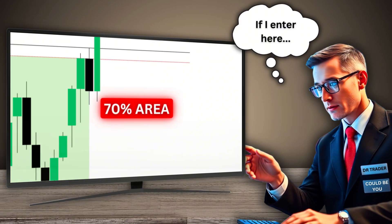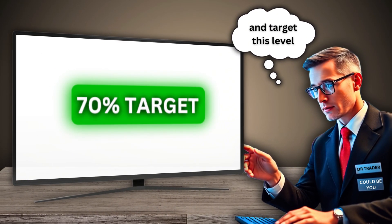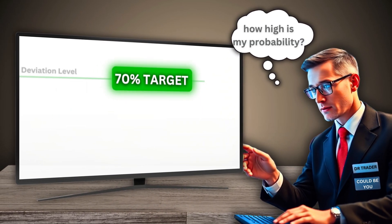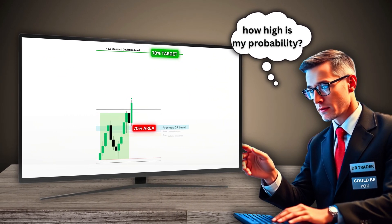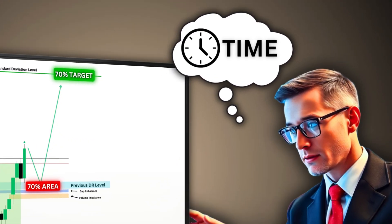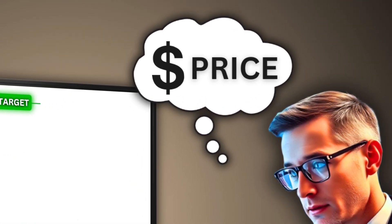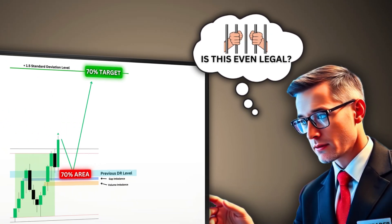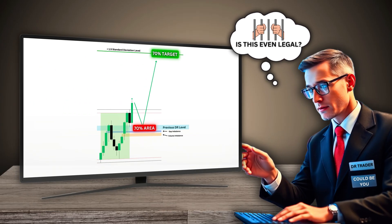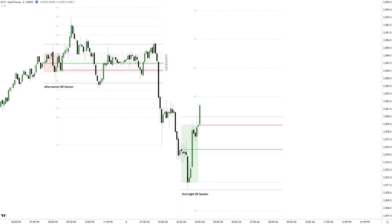Let me show you how access to deep historical data enhances everything you've learned so far and can be used for perfect executions based on time and price — that it almost feels illegal. Today's example will be on gold futures from last week's Thursday overnight price action.